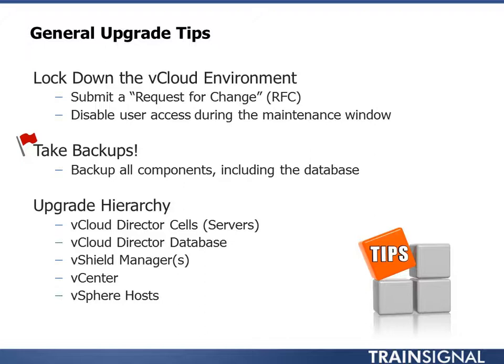The five things we're going to upgrade are: the vCloud Director cells or servers — in this course we only have one — the vCloud Director database, which is always just one regardless of the number of cells, the vShield managers (one per vCenter), vCenter itself, and then the hosts. In this environment we have one vCenter, one vShield manager, and one vCloud Director cell — a simple flavor. Typically you'll have multiples, but the process doesn't change: upgrade vCloud components first, then vShield manager, vCenter, and the hosts.